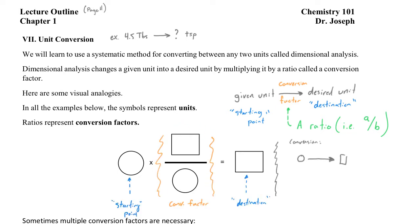For a ratio to function as a conversion factor, it needs to meet two requirements. The first requirement is that it needs to be true — there needs to be some definition or other way to verify that the ratio is correct. So for example, if one circle does in fact equal one rectangle, this conversion factor is true and we can use it. If you're not sure if a conversion factor is valid, you can write it down as an equality and check both sides to make sure it makes sense.